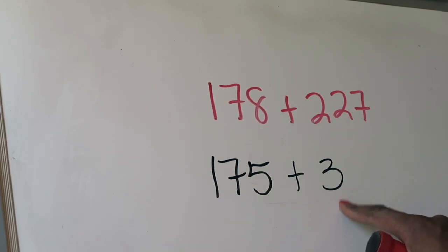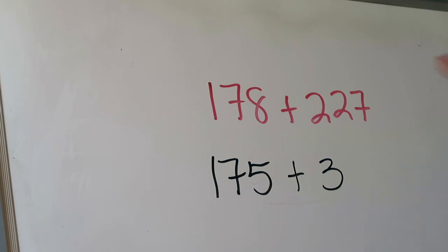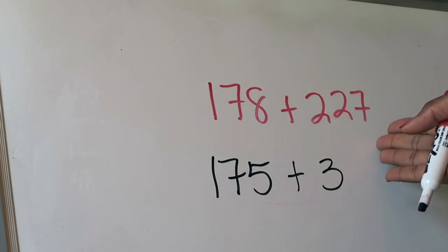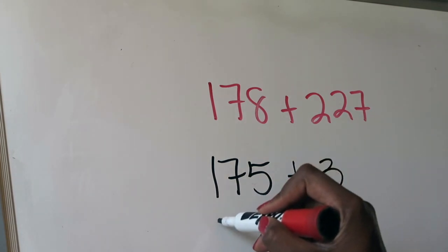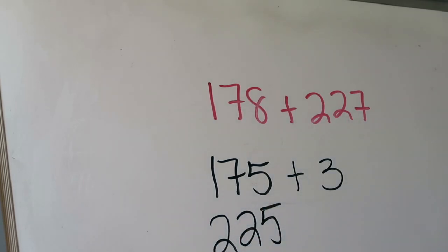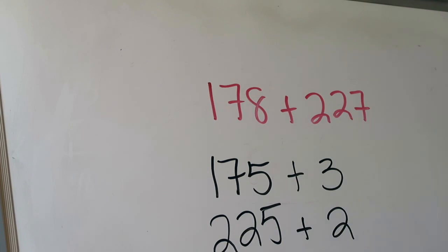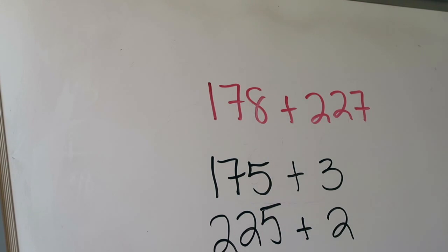This number is going to be very easy to work with, and the three is now a very small number that's easy to manage. Now I need to look at 227 and think about what I can change it to so that it's compatible with 175. You should immediately see that you can change 227 to 225, because adding numbers based on 25 is very nice. I should recognize that if I took 225 out of 227, I still have two left over, and those have to be accounted for off to the side.